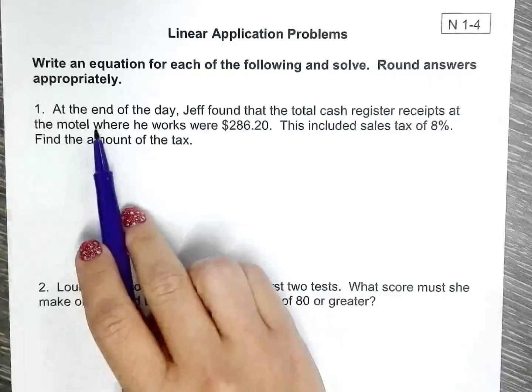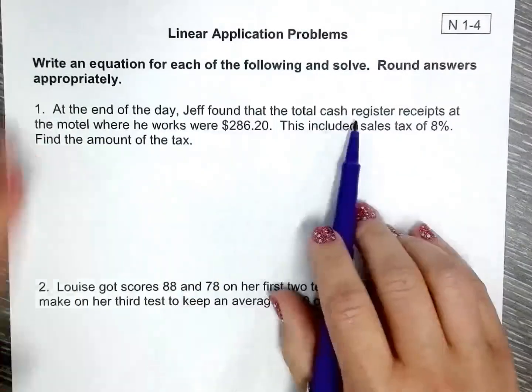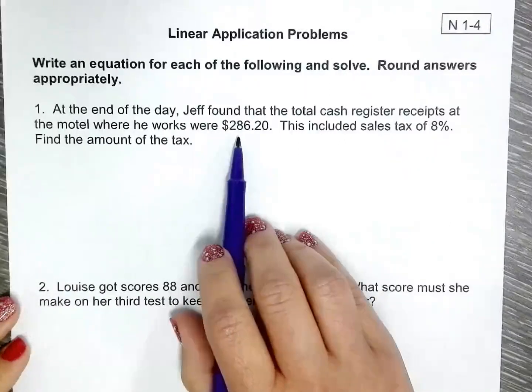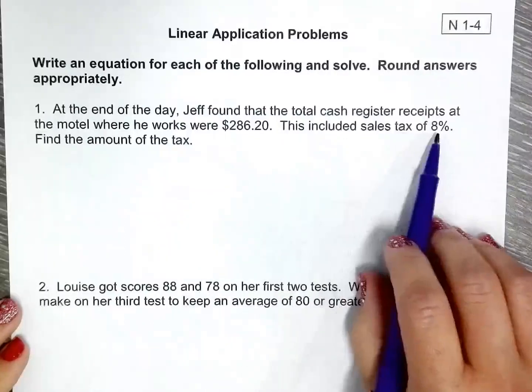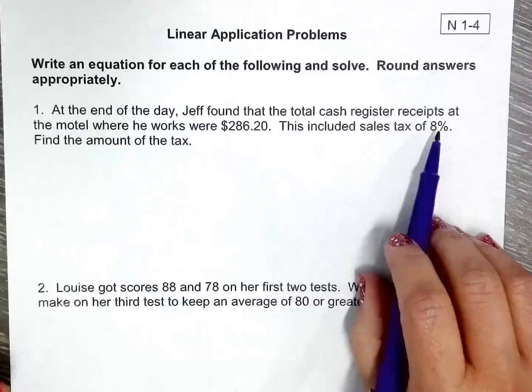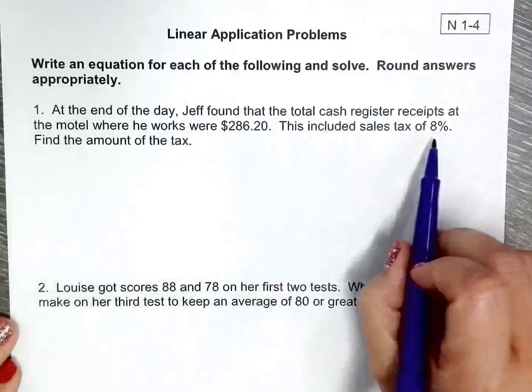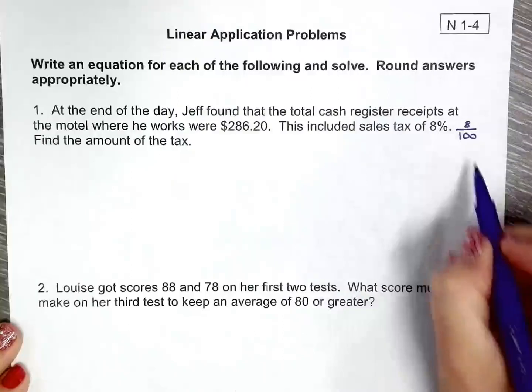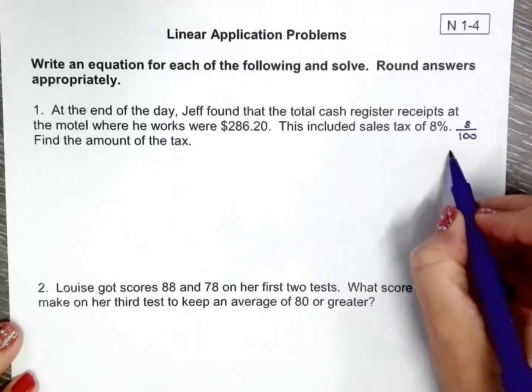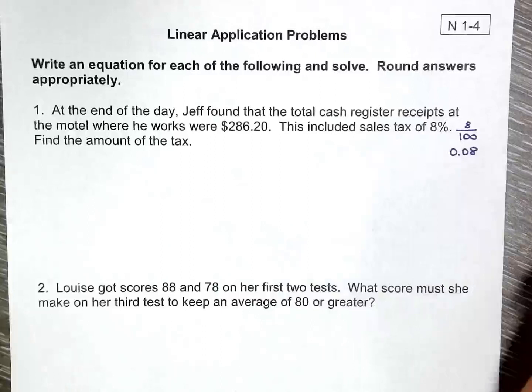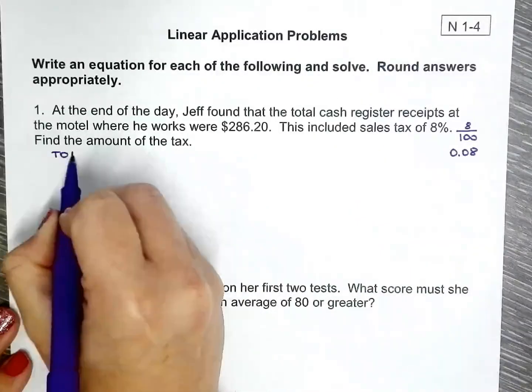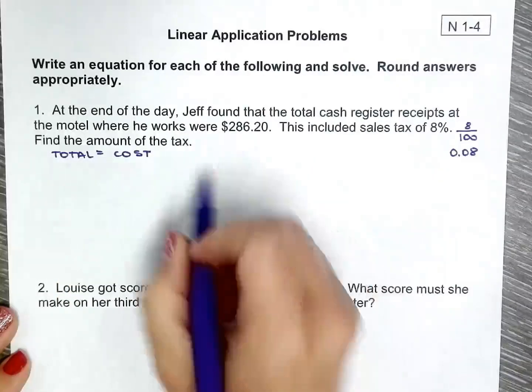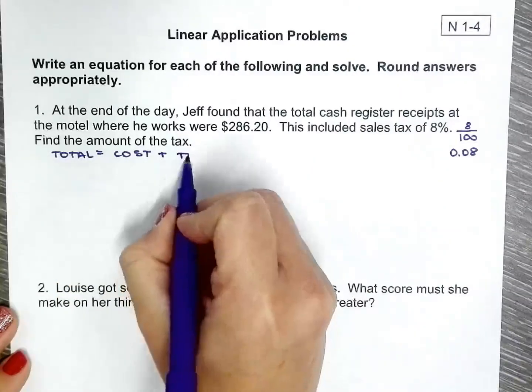So we have the first scenario. At the end of the day, Jeff found that the total cash register receipts at the motel where he works were $286.20. This included sales tax of 8%. We need to find the amount of tax. Just remember that 8% as a decimal is 0.08.